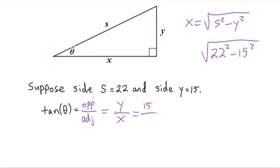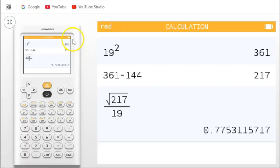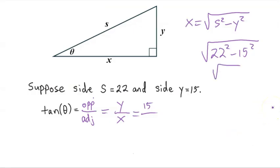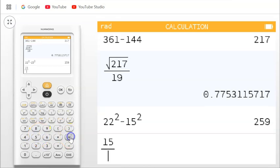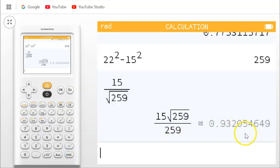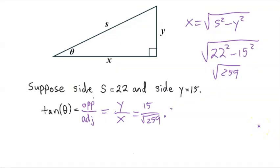I can put the whole thing into the calculator: 22 squared minus 15 squared gives us 259. So X is the square root of 259. Y is 15, so opposite over adjacent is 15 over the square root of 259. Doing 15 divided by the square root of 259 gives 0.932. So the tangent of theta is 0.932.